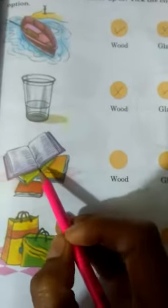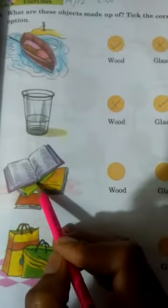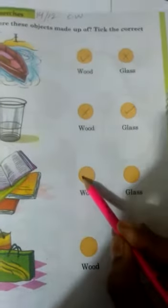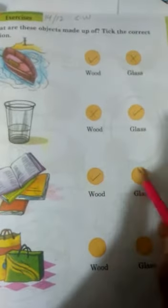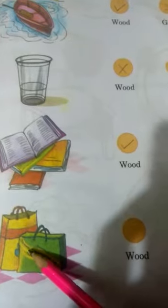Next one is book. Book is made of wood or glass? Yes, book is made of wood, not made of glass. Next one is paper bags. Bags that are made of wood or glass? Wood, understand? Not made of glass.